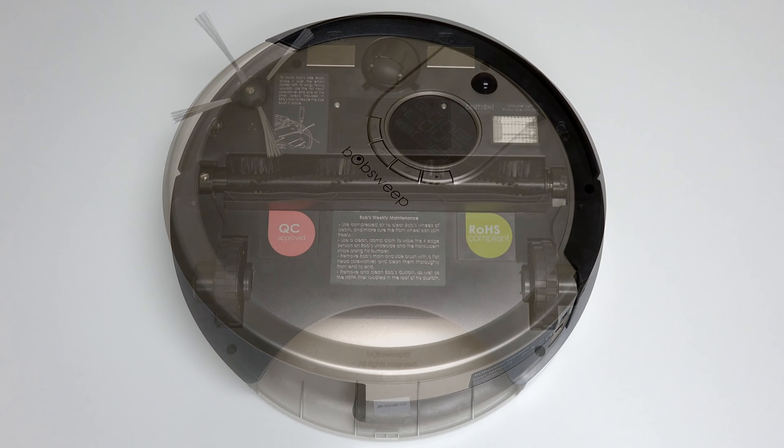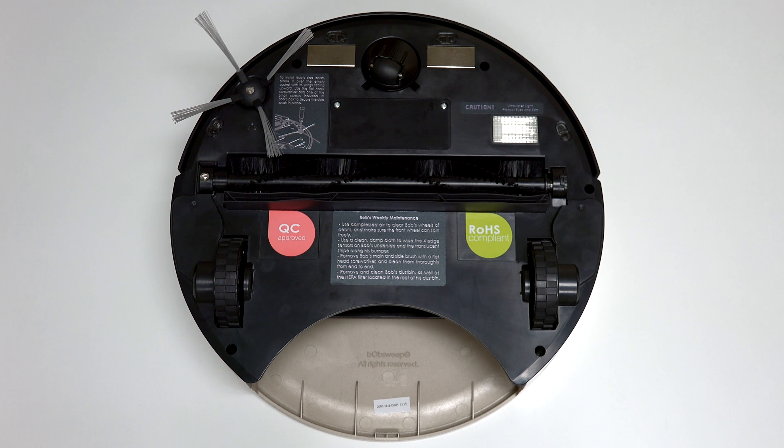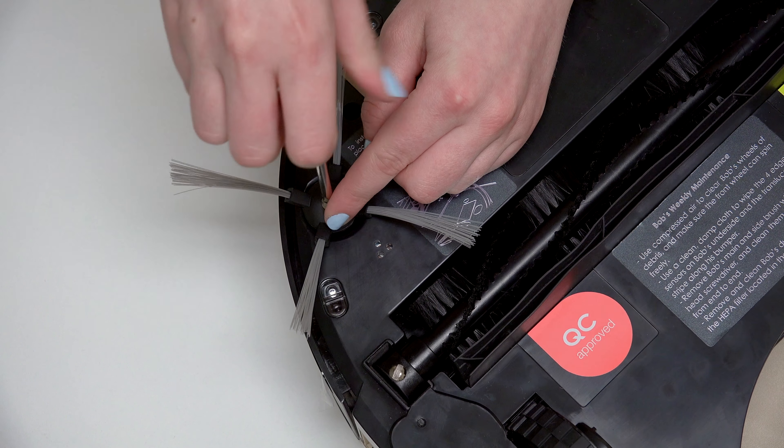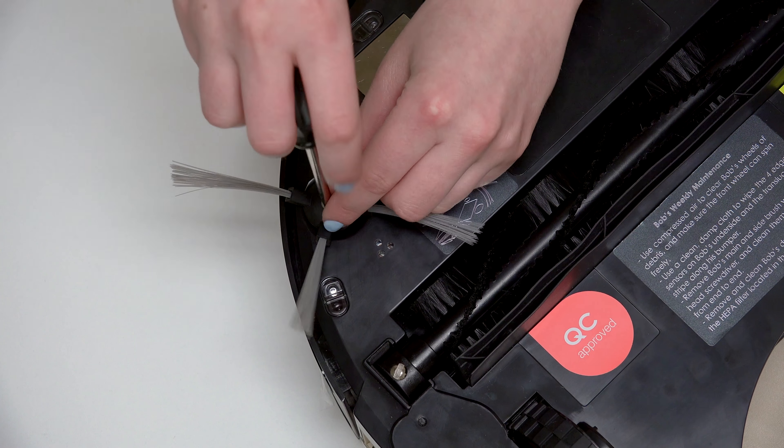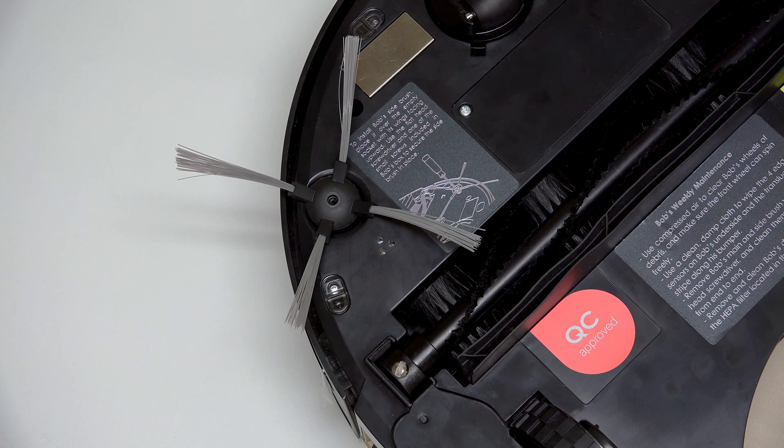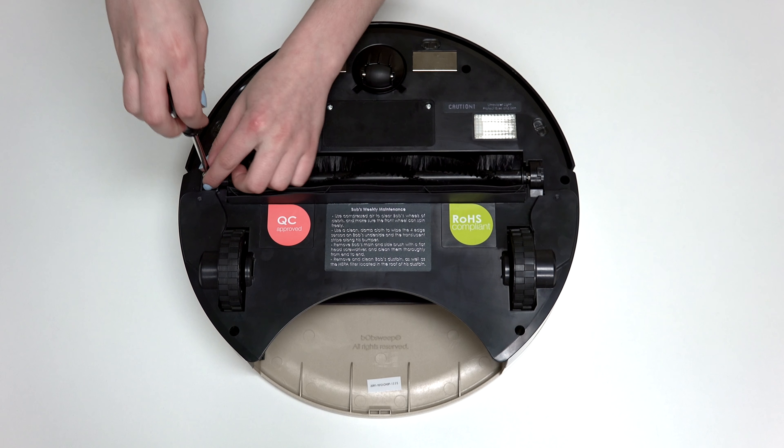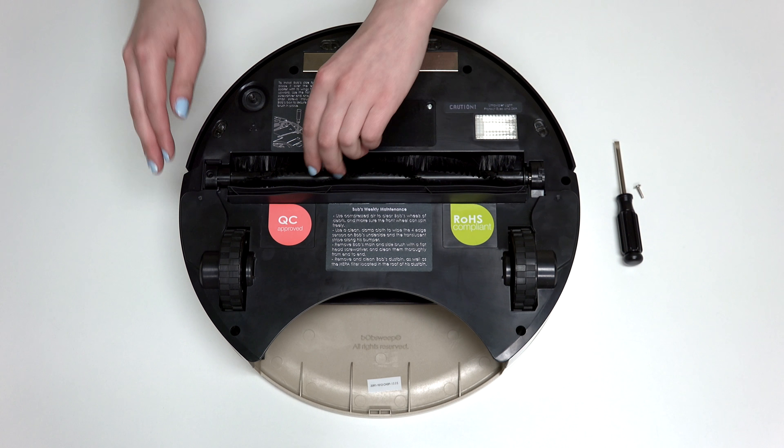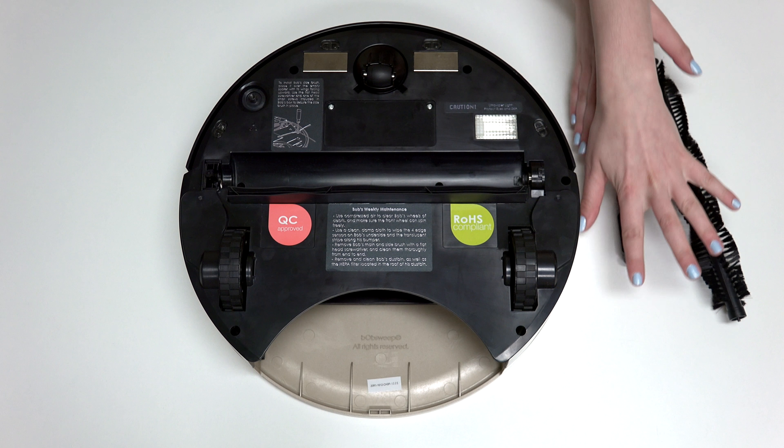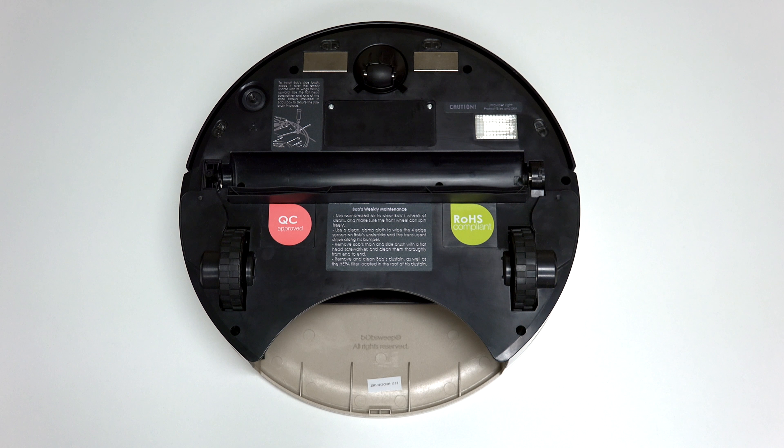Flip Bob over onto a flat surface and remove his main and side brushes using the flat head screwdriver. Keep all removed screws and parts safely aside as they may be needed for later reassembly.